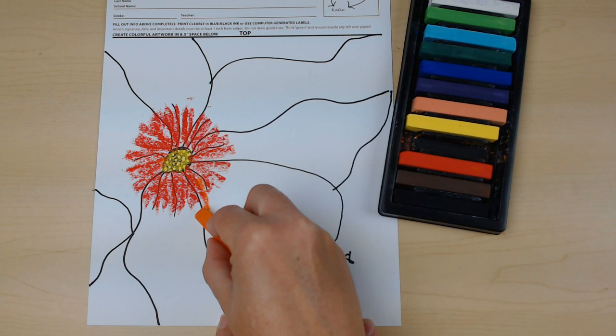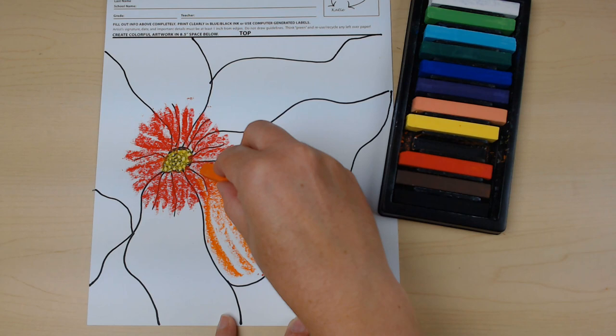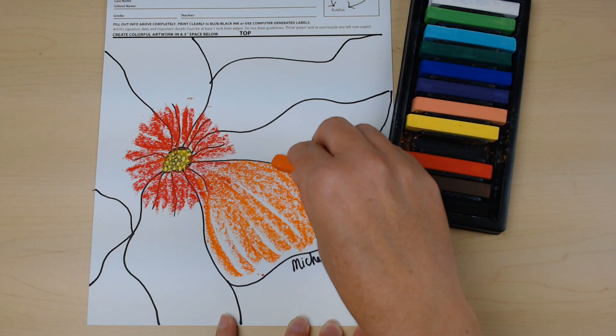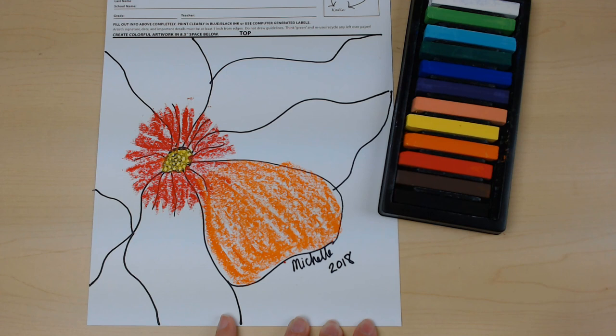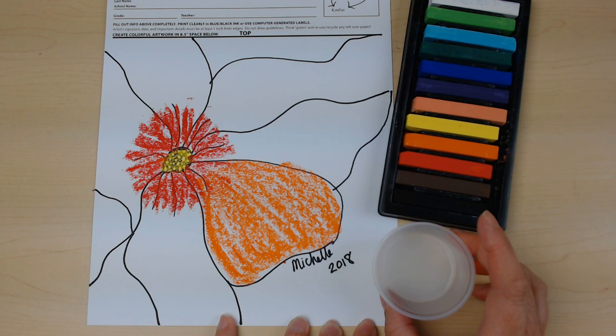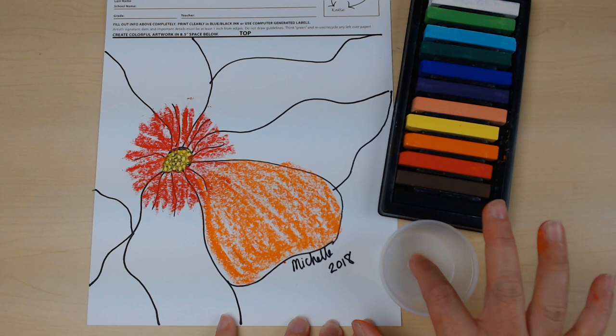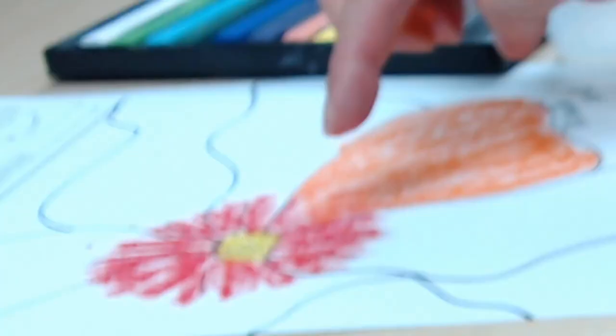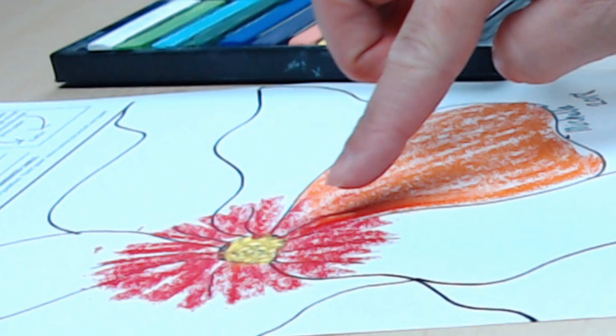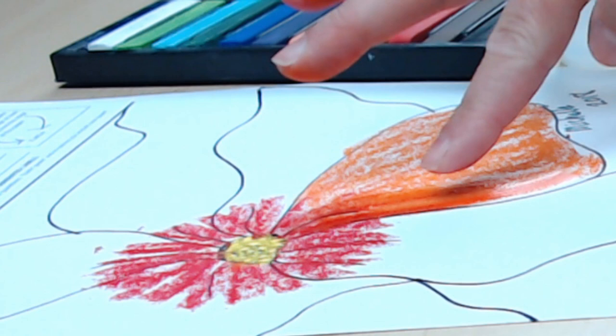And then now I'm going to pull out with my second color and I'm going to add a little bit more color here. And now that I've got this one petal filled in, I'm going to start to blend my colors. And to blend and set our colors, we're going to use liquid starch. And it is a little funny feeling. It feels a little slimy. We're just going to dip our finger in and just get a little bit on our finger, not very much.